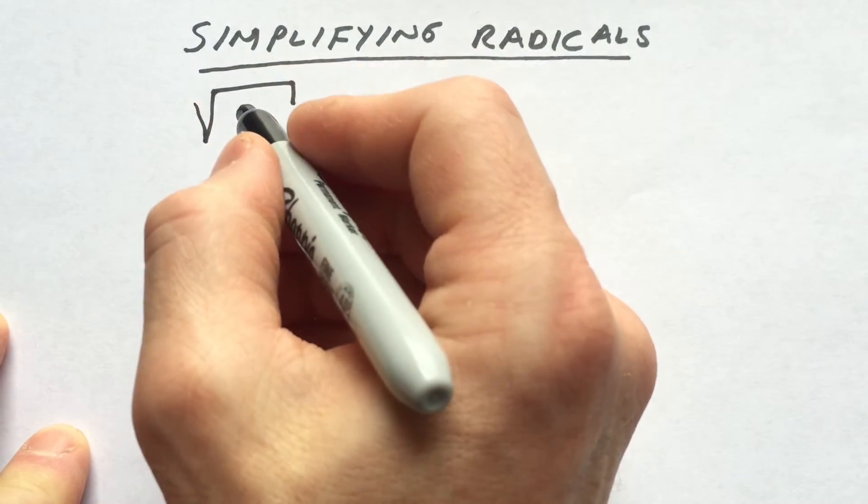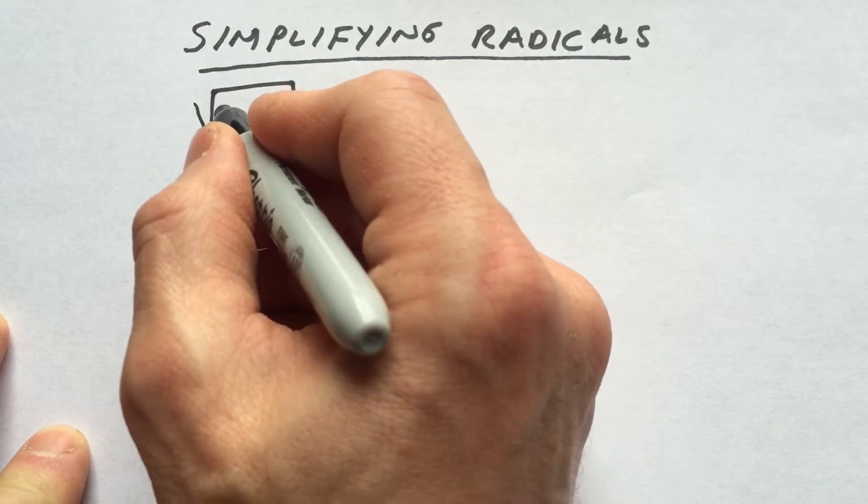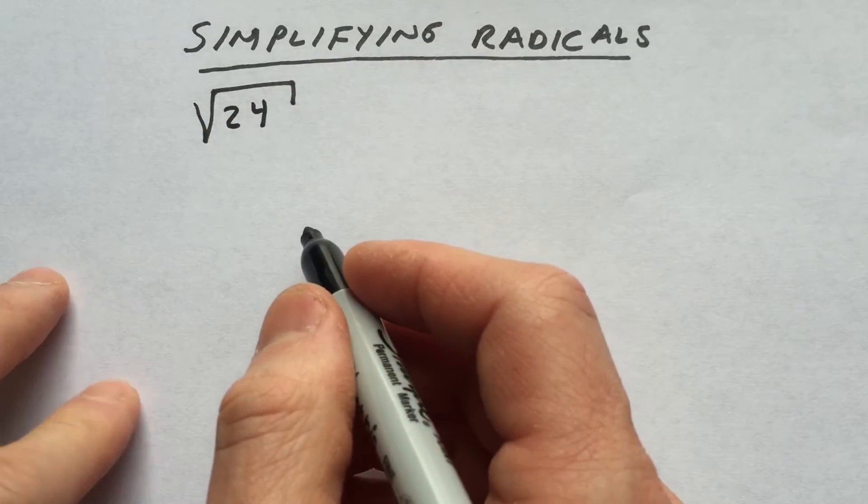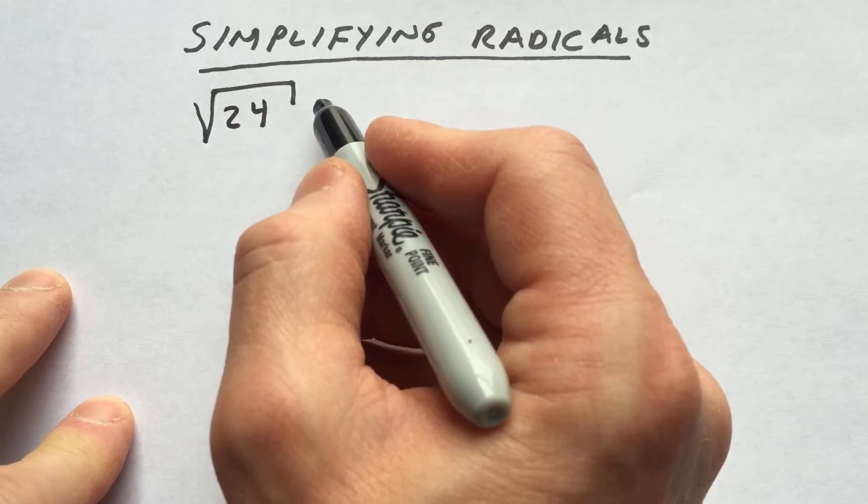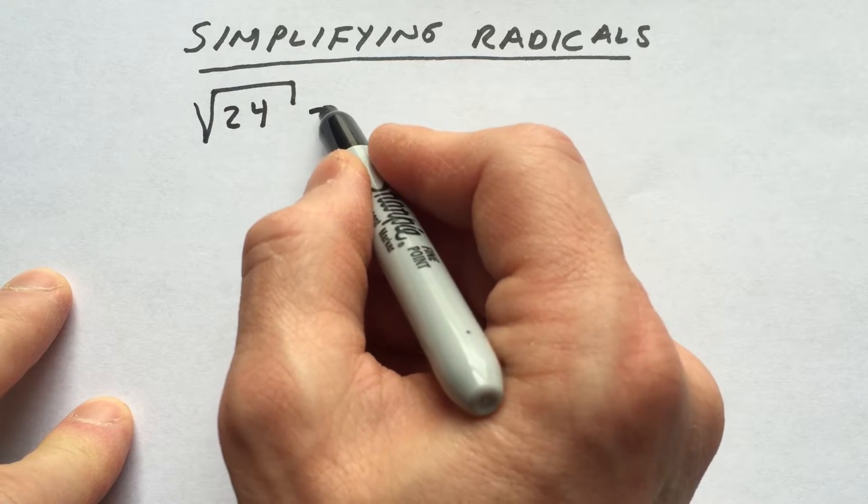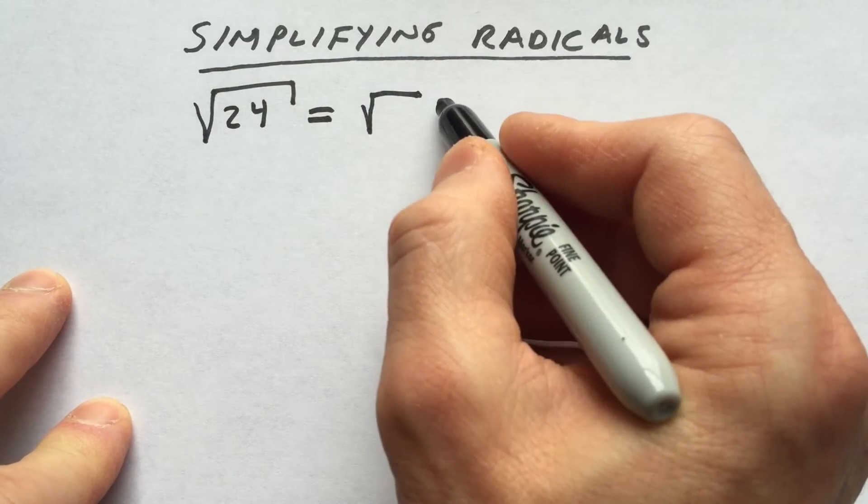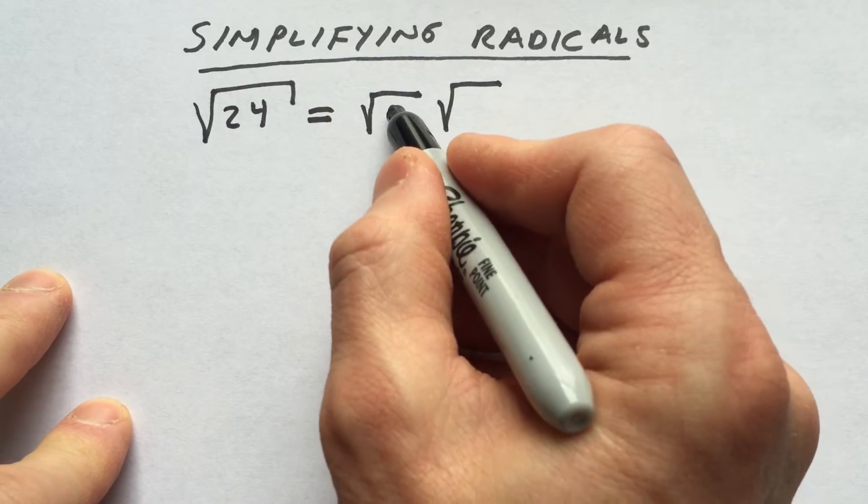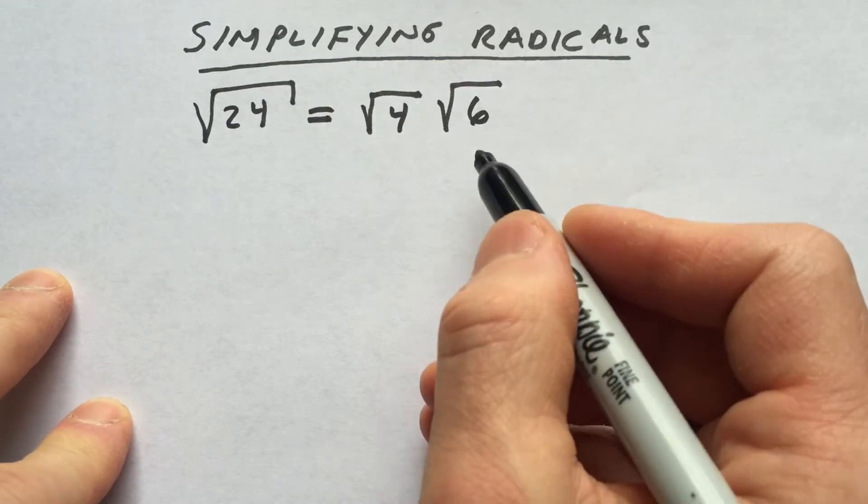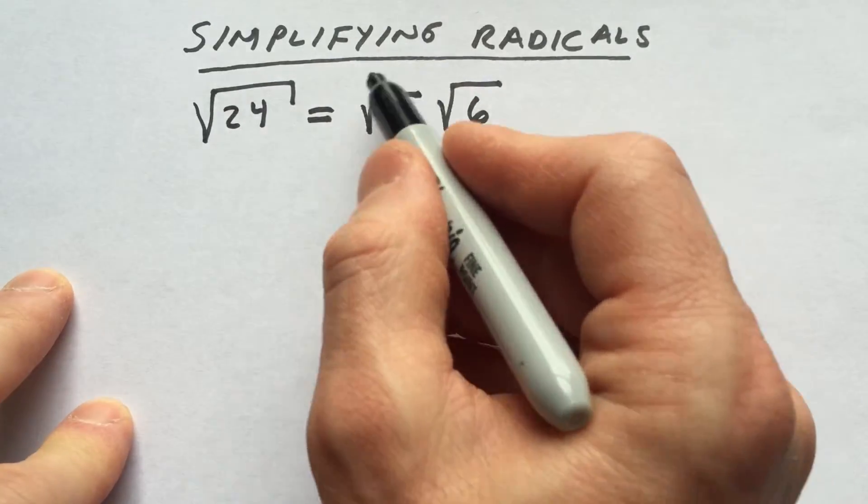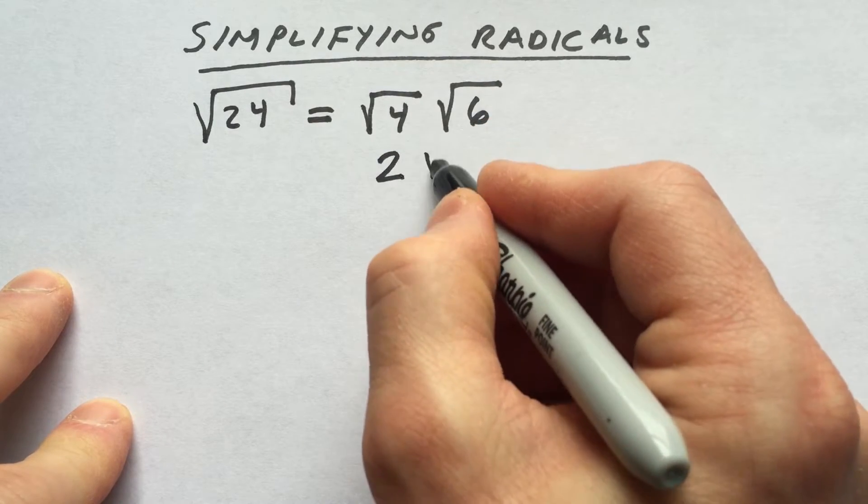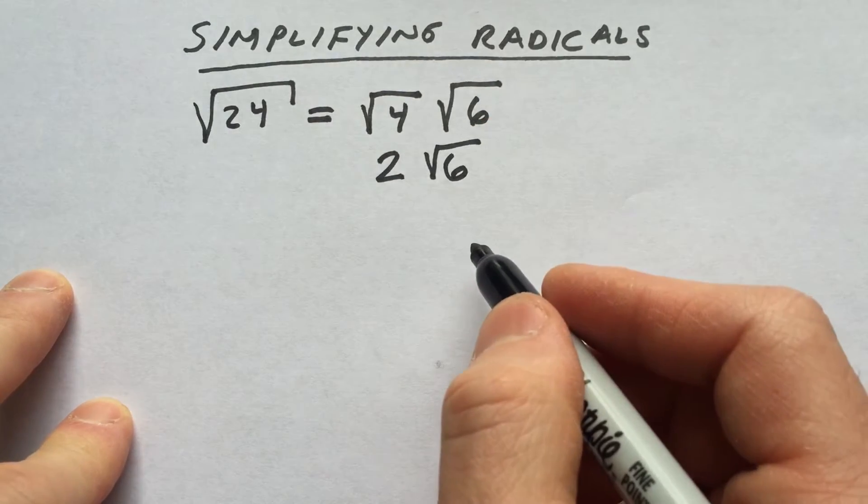So what we're going to do here is start off with the square root of 24, for example. So how do we simplify the square root of 24? Well, there's a couple different ways. One way is you can divide out a perfect square. For example, 4 times 6 is 24, but the square root of 4 we know is 2, so we can simplify this to 2 square root of 6.